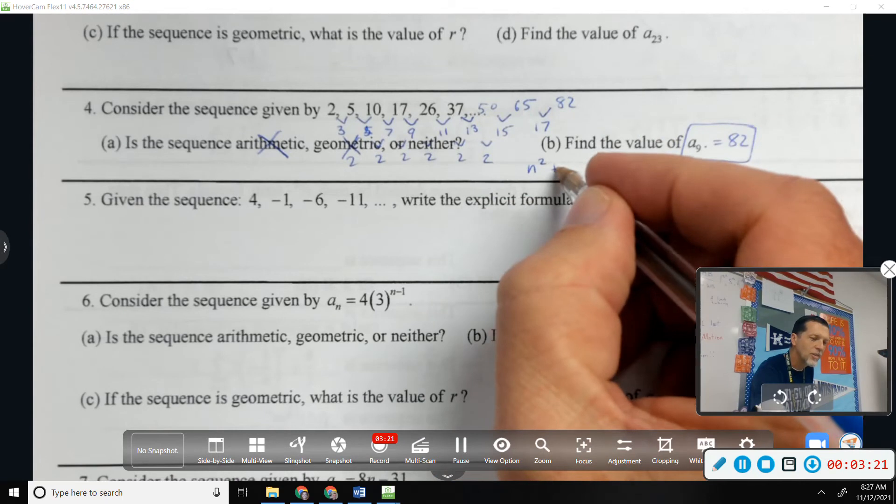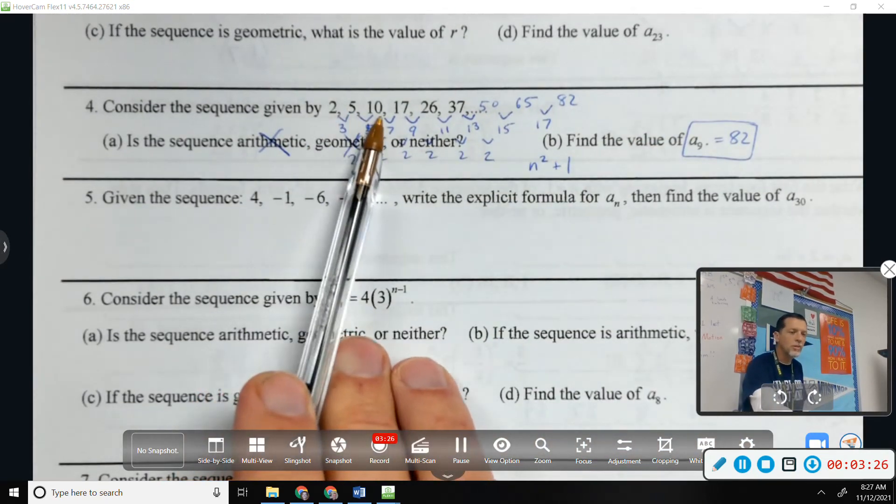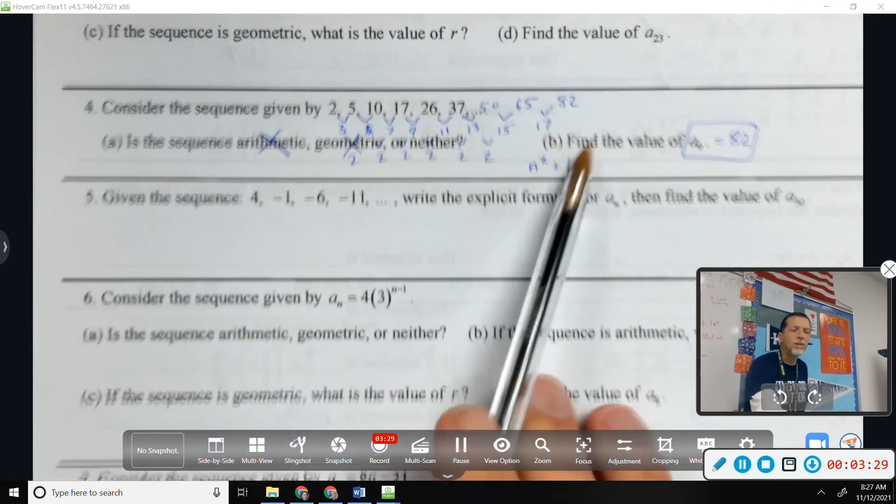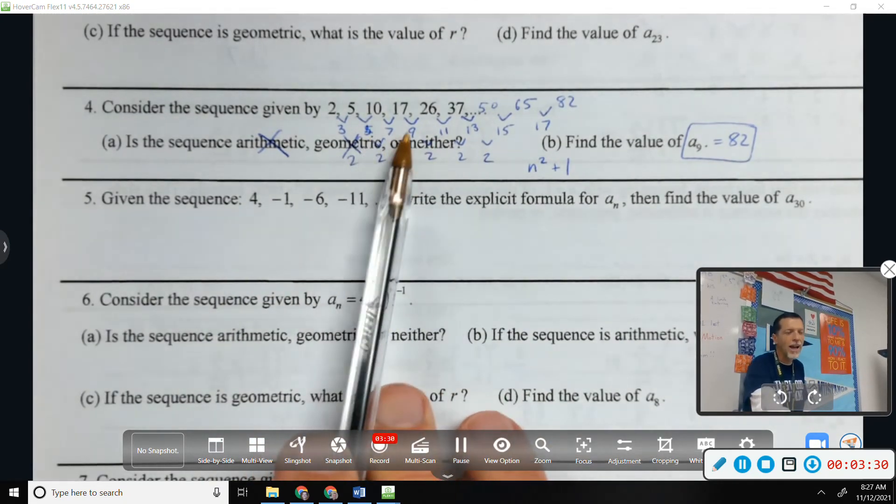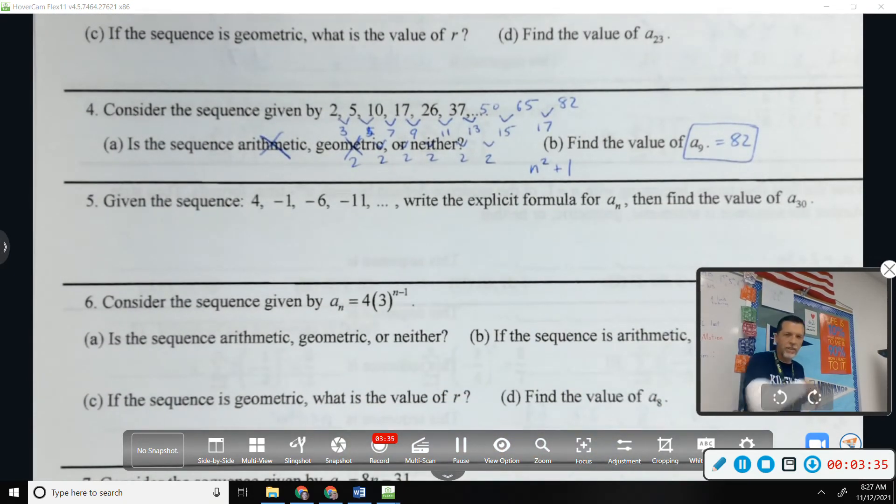It's really just n squared plus one. One squared plus one, two squared plus one, three squared plus one. But we don't have to do that. As long as we saw that we're adding an extra two every time, we can just kind of work our way up to the ninth term.